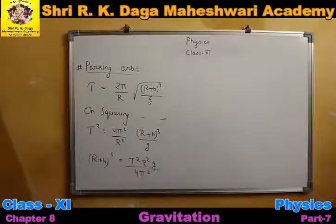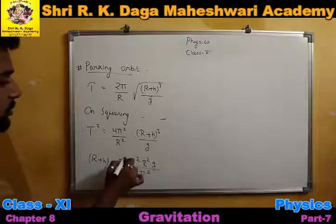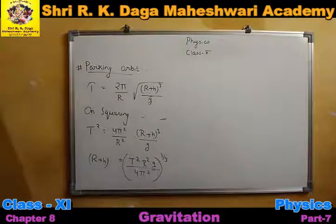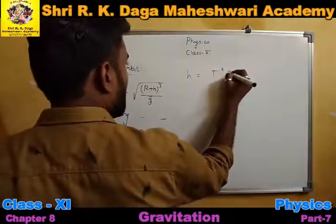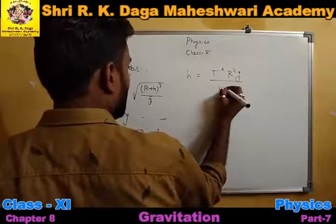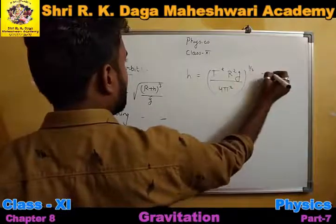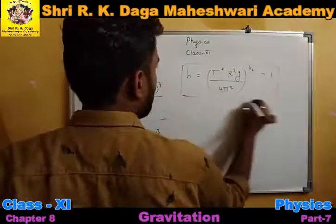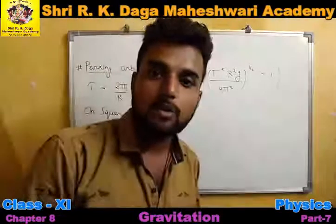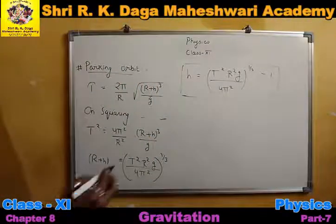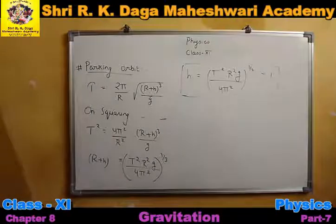We just rearranged the terms. From this, we can further derive: removing the cube gives power 1/3. So we can extract h: h = [T²r²g / 4π²]^(1/3) − r. This is the expression for h — the height at which the orbit exists, and any country can launch its satellite in that orbit.